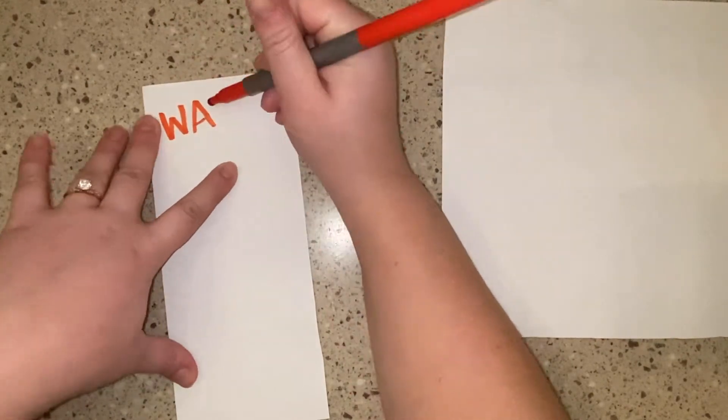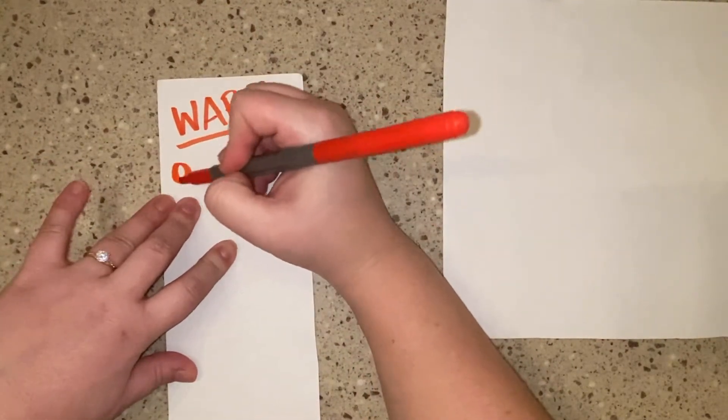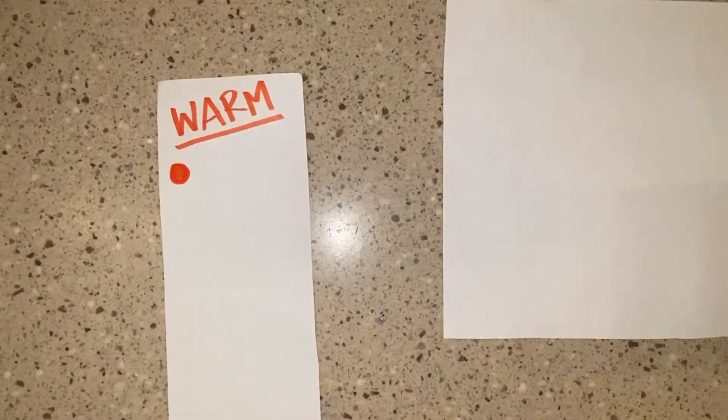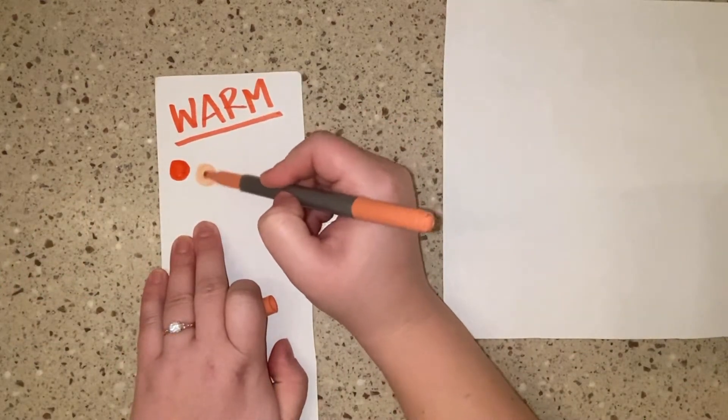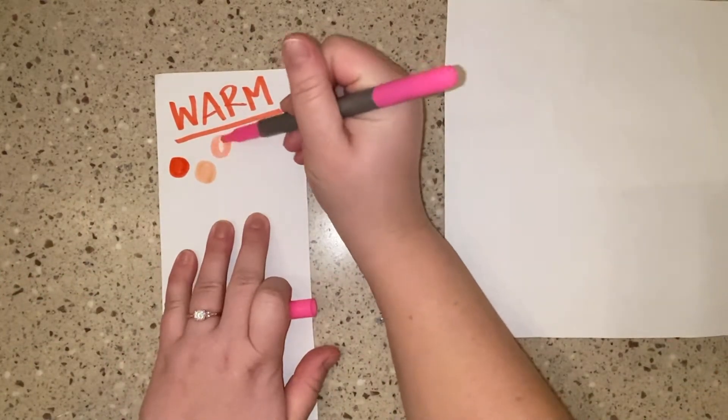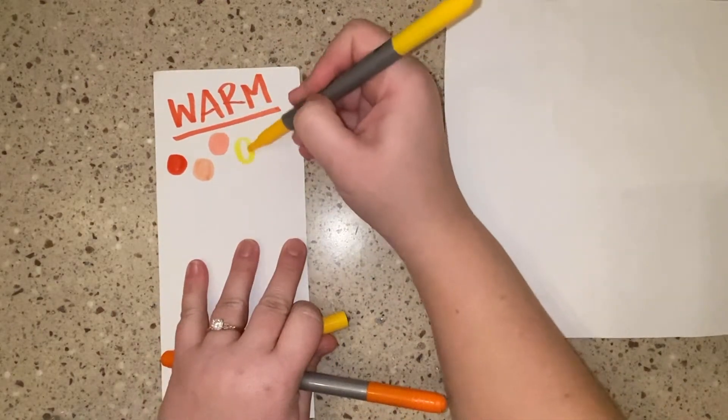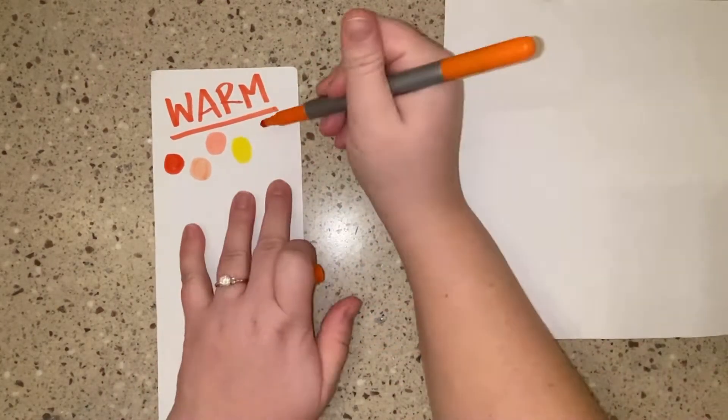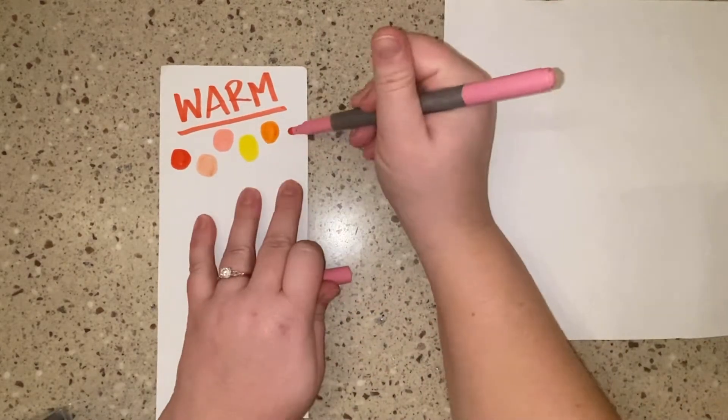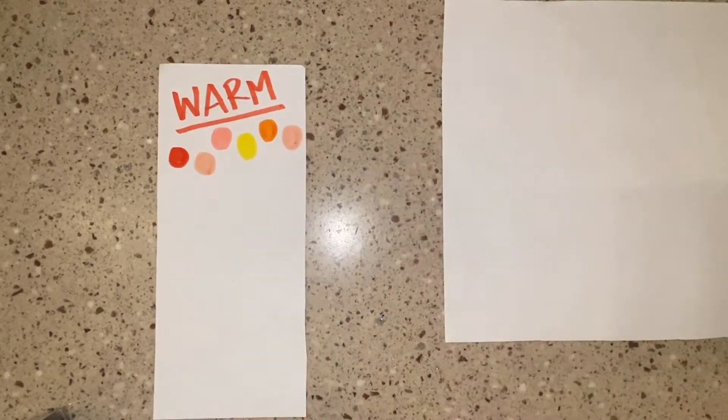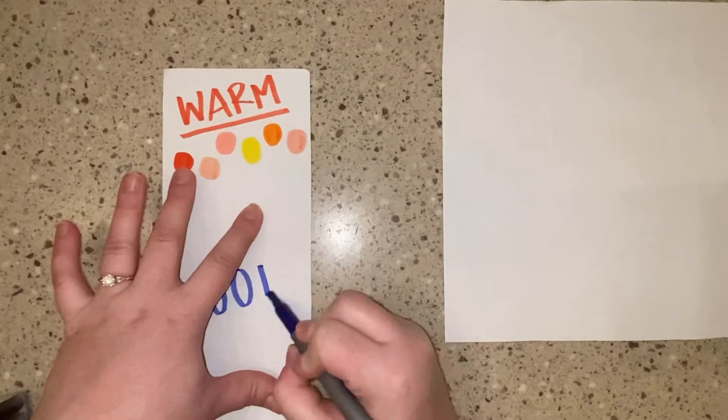I want to talk first about warm versus cool colors. Remember the warm colors are colors that make us feel warm or make us think of warm things. Those colors are reds, yellows, pinks, oranges, peaches, even some browns.